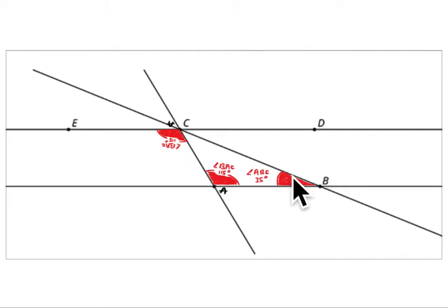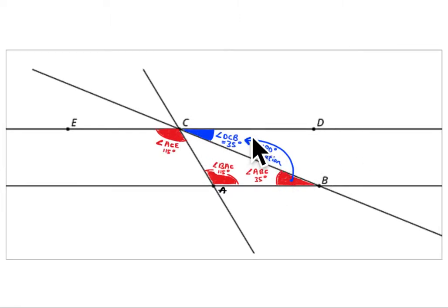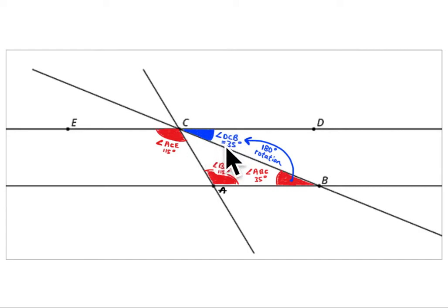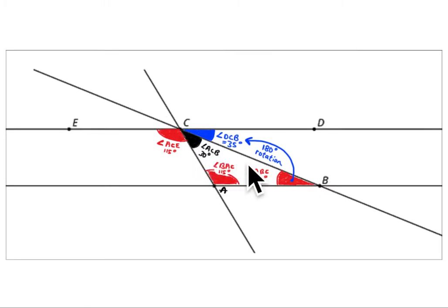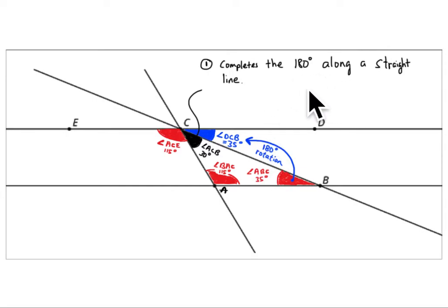The other side is also an alternate interior angle. You take it and rotate it 180 degrees — it lands right there. They give angle ABC as 35 degrees, so angle DCB is also 35 degrees. And angle ACB must complete the 180 degrees along the straight line. So you know they add to 180, which gives ACB as 30 degrees.